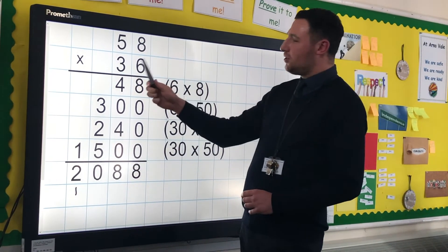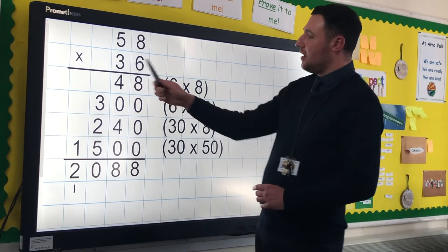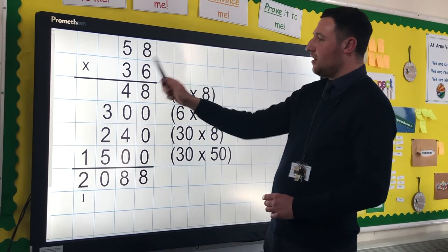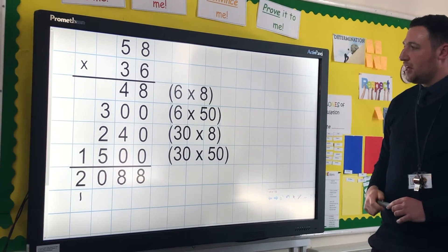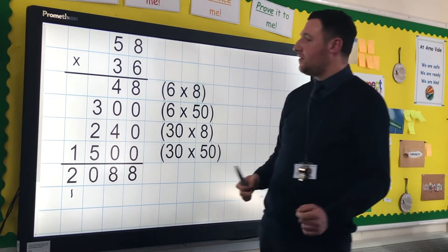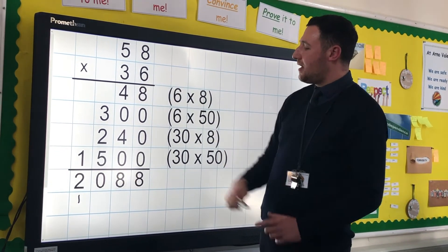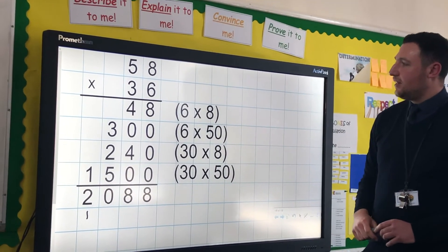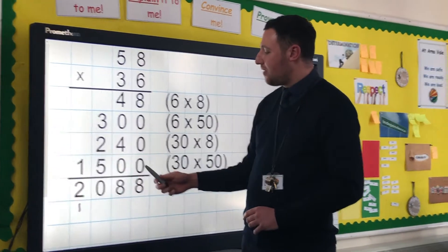This next bit's quite crucial. This is where we often get children making mistakes, because some will go 3 lots of 8 when it's really 30 lots of 8. So that place value is so important — partitioning from previous videos is so important. 30 lots of 8 is 240, and then 30 lots of 50 is 1,500.